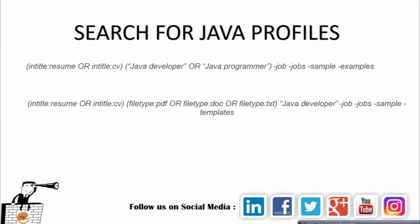Now let's look at the basic search string to find Java developer resumes on Google. As you can see, we have intitle:resume OR intitle:CV in brackets, and we're using OR between them. We then open a bracket to write java developer OR java programmer — you can also include java coder or java engineer. The minus symbol is used to remove irrelevant results, so we remove jobs, samples, and examples from showing up.